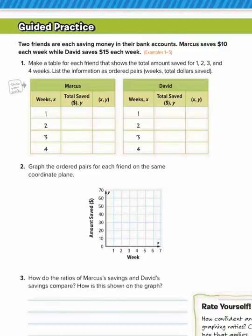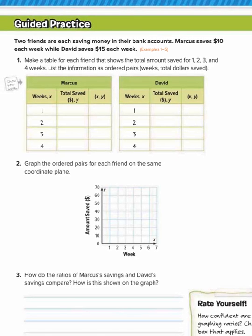So now we're on workbook page 50. We're going to do the guided practice together. So this says, two friends are each saving money in their bank accounts. Marcus saves $10 each week while David saves $15 each week. Make a table for each friend that shows the total amount saved for 1, 2, 3, and 4 weeks. List the information as ordered pairs where weeks is the x-coordinate and dollars saved is the y-coordinate.